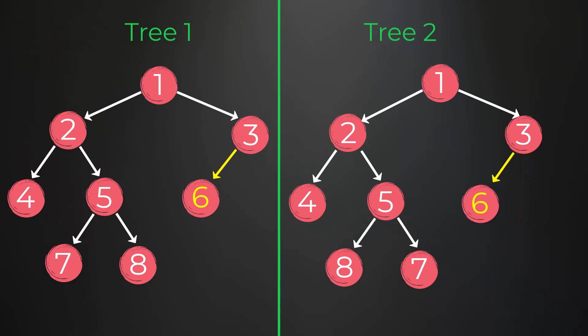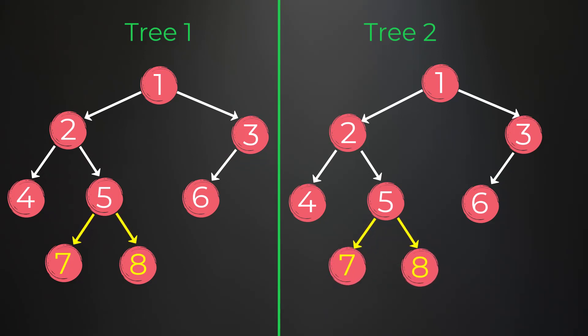So we're going to swap the subtrees under node 3. Finally we check level 3 and see the nodes are not the same. If we swap the subtrees under node 5 we confirm that the trees can be made equivalent and we would return true from our function again.